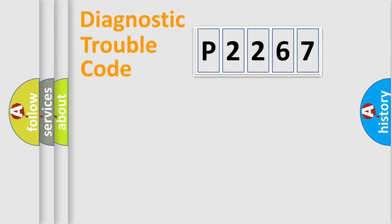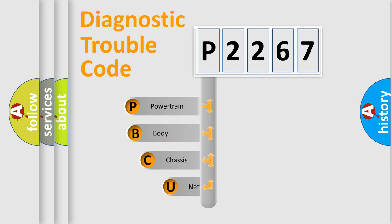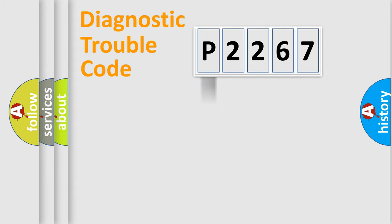Let's do this. First, let's look at the history of diagnostic fault code composition according to the OBD2 protocol, which is unified for all automakers since 2000. We divide the electric system of an automobile into four basic units: Powertrain, Body, Chassis, and Network.